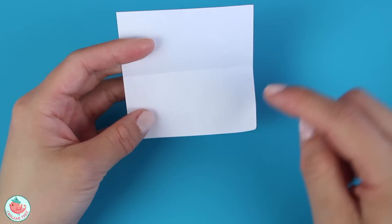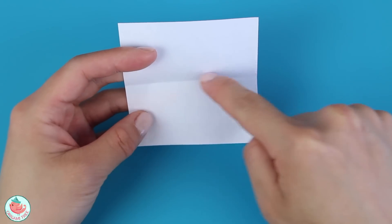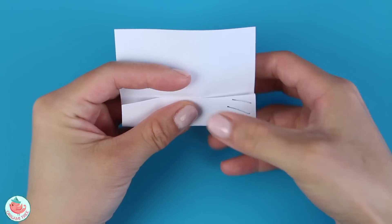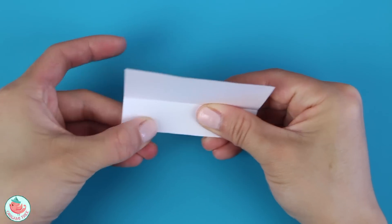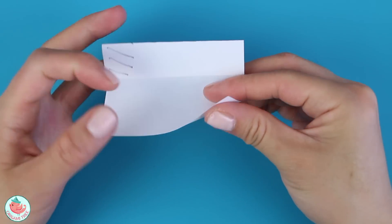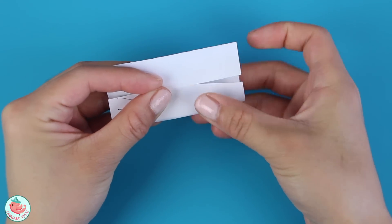After that, you want to unfold and then align this bottom side to the horizontal center crease that you just created. So just fold it straight up and crease that in. Rotate and repeat the same thing on the other side. So you're going to fold straight up and crease it in.